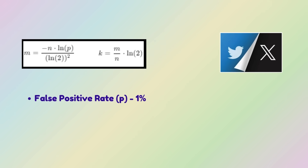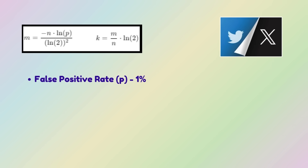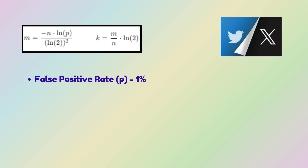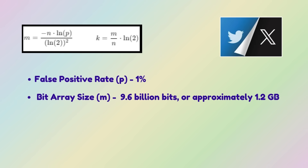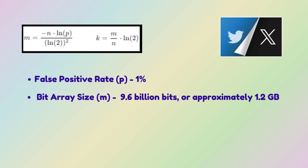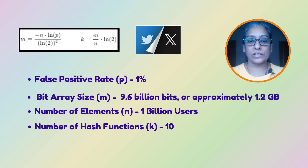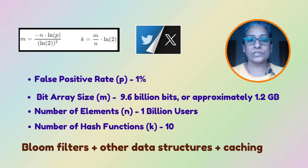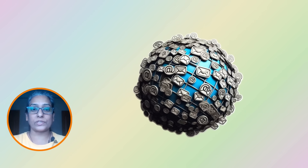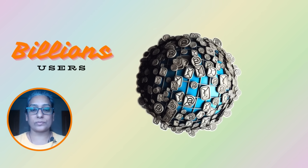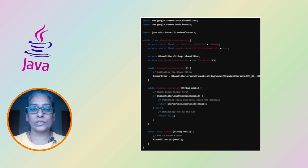Here are the formulas used. For a platform as large as Twitter, maintaining a low false positive rate — typically less than 1% — is crucial. This prevents users from being told incorrectly that a username or email ID is already in use when it is not. Twitter aims for a false positive rate P of less than 1%. The bit array size M would be about 9.6 billion bits or approximately 1.2 gigabytes. With around 1 billion users, the optimal number of hash functions K would be around 10 according to the formula. Here is a quick implementation in Java using the Guava library.